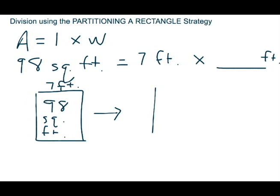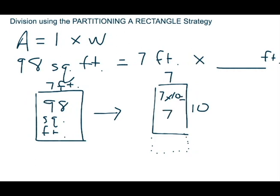I'm going to draw another rectangle and draw dots, because I'm partitioning the larger rectangle that has an area of 98 square feet, and I'm going to partition it into two different parts. If I have my basic division facts memorized, I know that 7 times 10 equals 70. 70 is less than 98, but it's getting me close to that 98. I'm going to write the 98 here, and now subtract the 70 that I just solved for to figure out how much is left.